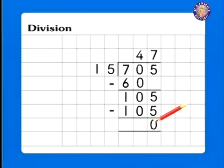So, the answer to 705 divided by 15 is 47.